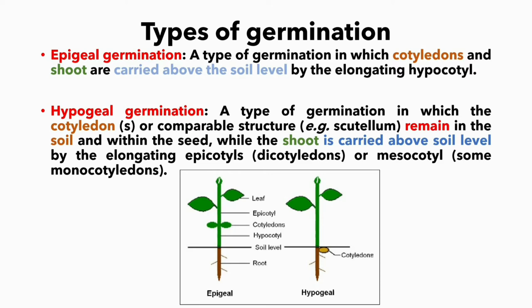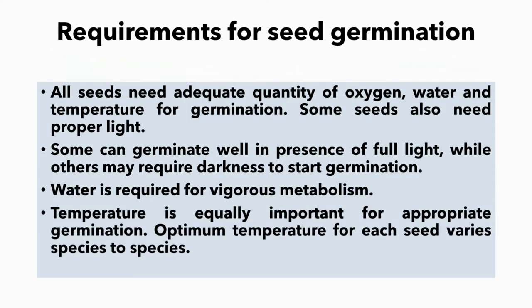There are two types of germination: epigeal germination and hypogeal germination. A type of germination in which cotyledons and shoots are carried above the soil level by the elongating hypocotyl is known as epigeal germination. Whereas a type of germination in which cotyledons remain in the soil within the seed while the shoot is carried above the soil level by the elongating epicotyl or mesocotyl is known as hypogeal germination.